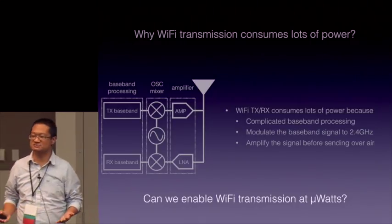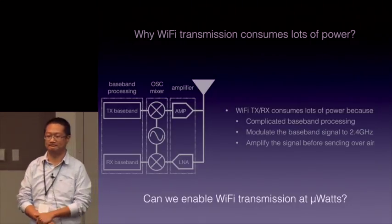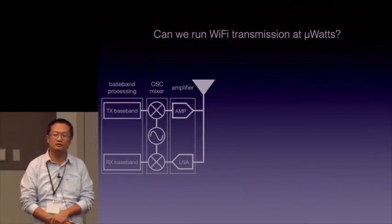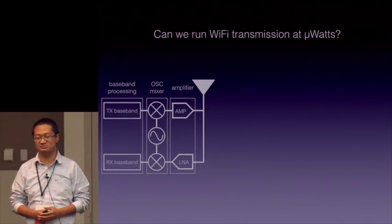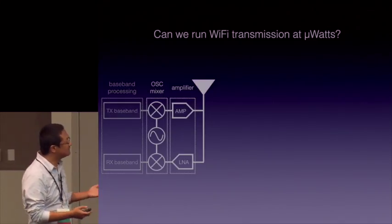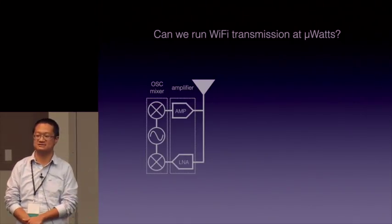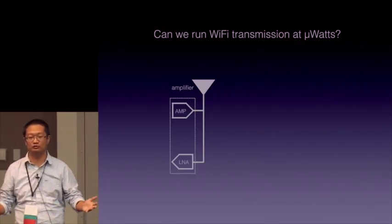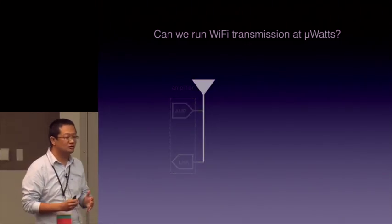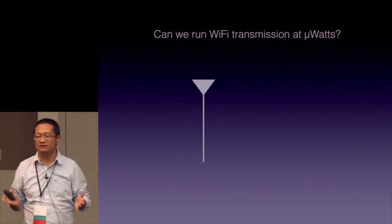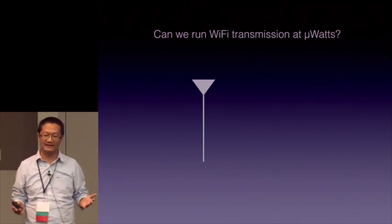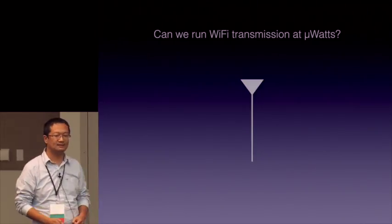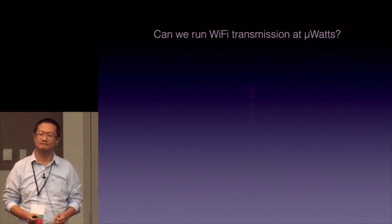So how to do Wi-Fi transmission while consuming only microwatts of power? If you want microwatt power consumption, you cannot have baseband processing, you cannot run oscillator plus mixer circuits to move the signal to 2.4 GHz, and you cannot run an amplifier. The only thing you can keep is a very simple Wi-Fi antenna.